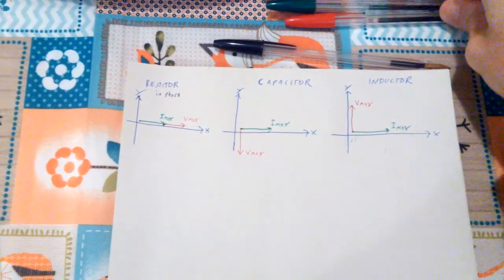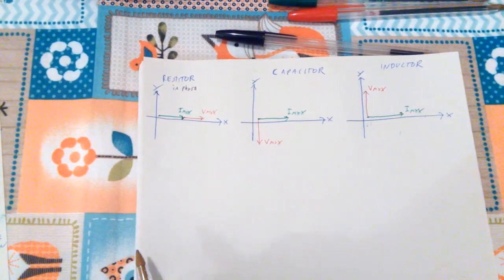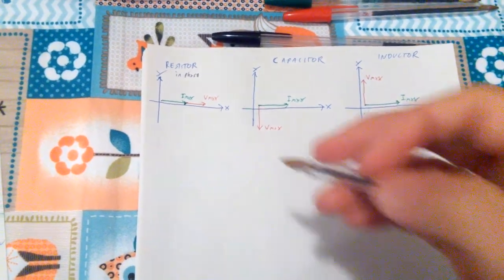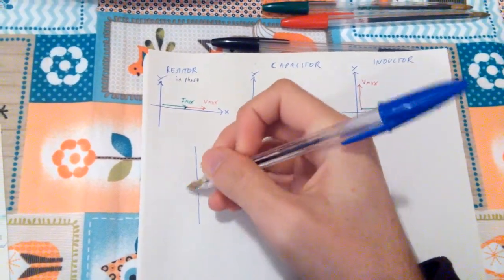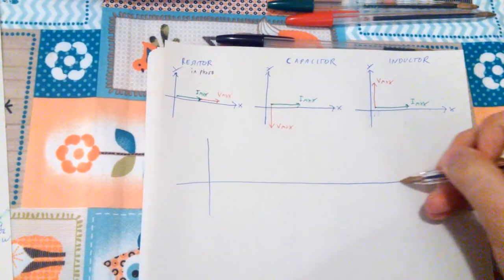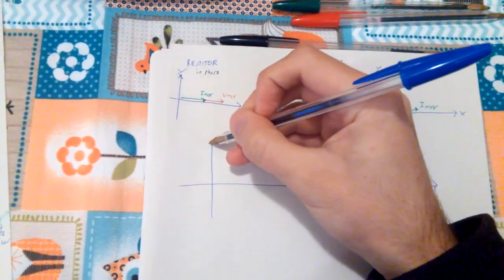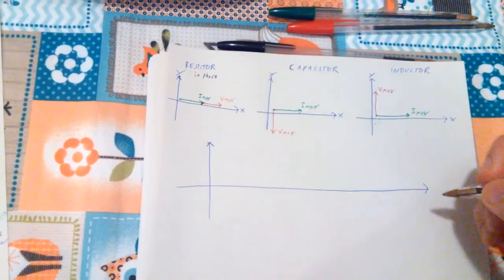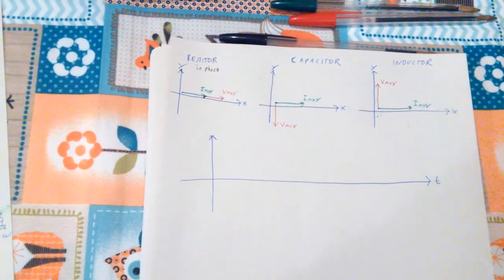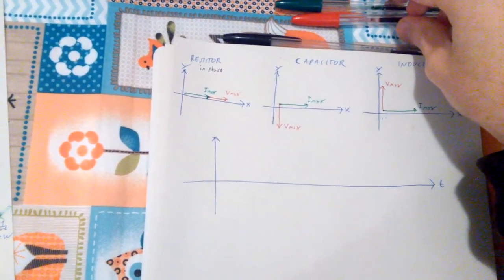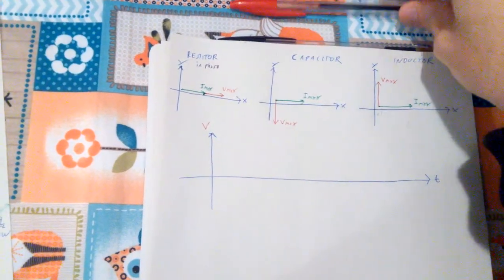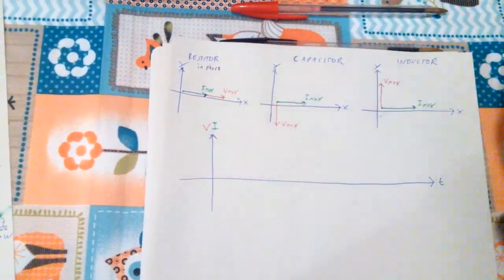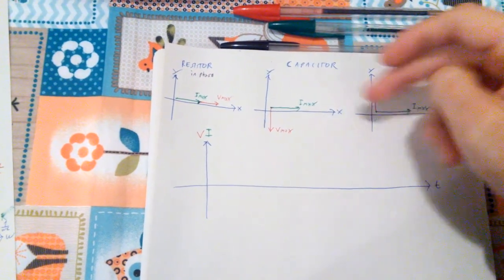Now, if we were to plot this in a graph, but not like as phasor, but as if they were sinusoid, which they are, so this one is going to be my time T, and I'm going to have V and I, V in red and I in green, just like before.